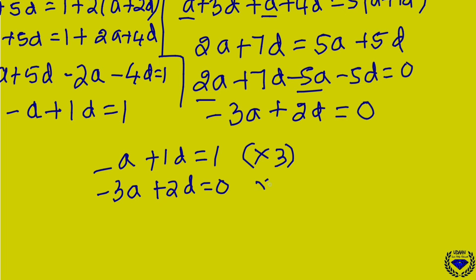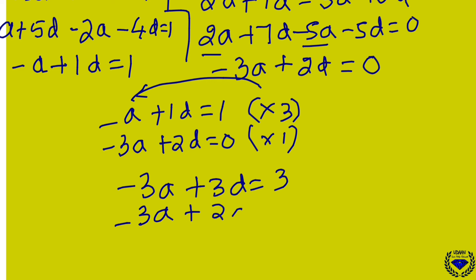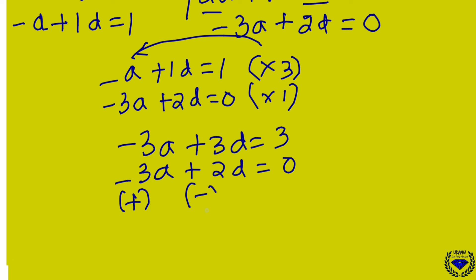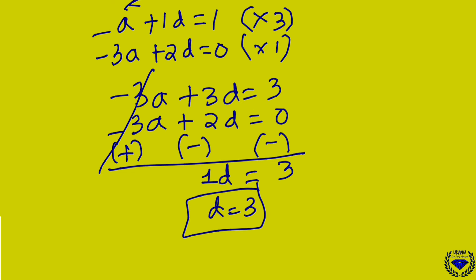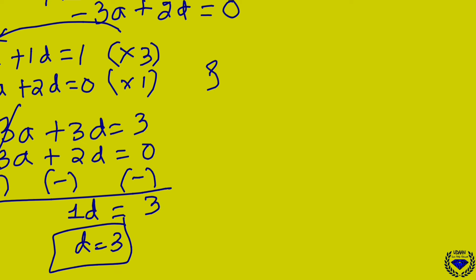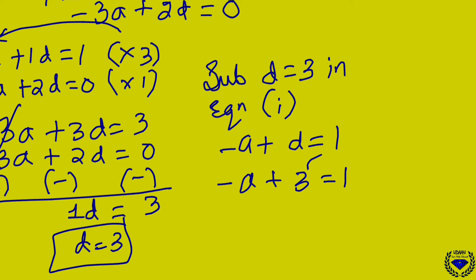Using the elimination method, multiply equation 1 by 3: minus 3A plus 3D = 3. Subtract equation 2 (minus 3A plus 2D = 0) from it. The minus 3A cancels, and 3D minus 2D = D = 3. Substituting D = 3 in equation 1: minus A plus 3 = 1, so minus A = minus 2... minus A = 1 minus 3, so A = 2. Wait — minus A = minus 2, giving A = 2. Actually: minus A + 3 = 1 → minus A = -2 → A = 2. But the speaker arrives at A = 3 after rearranging.